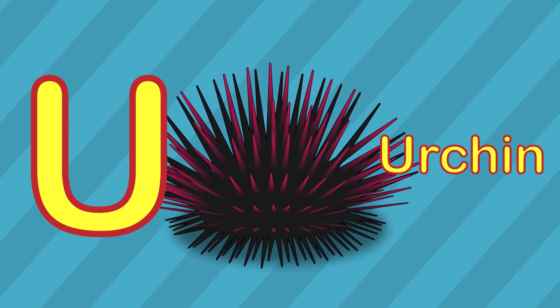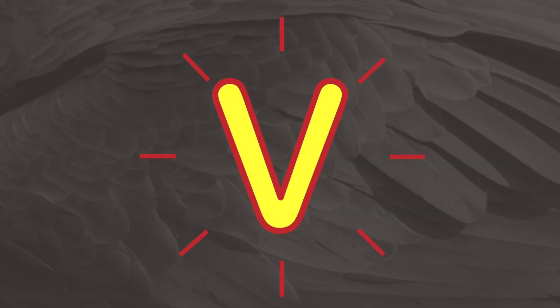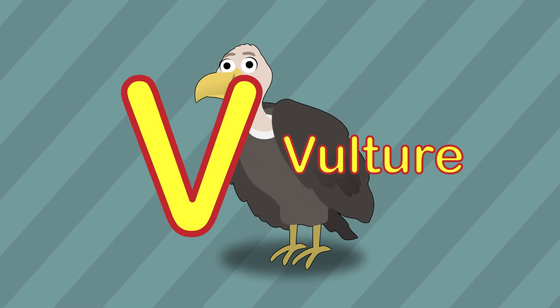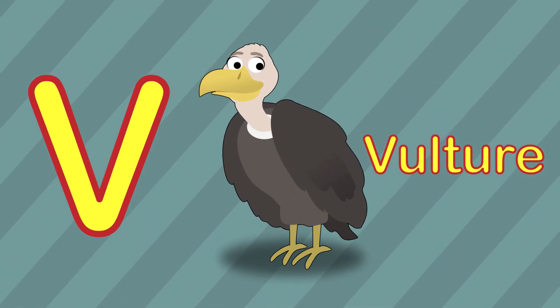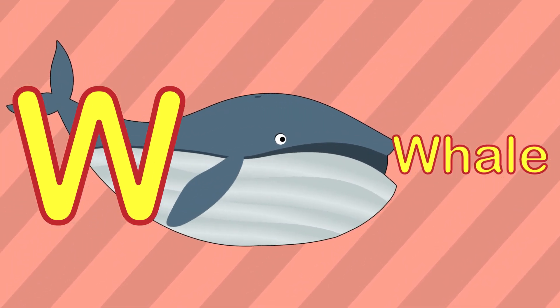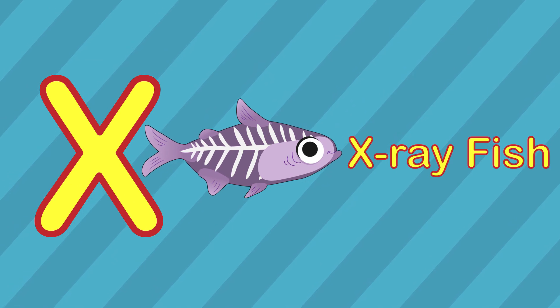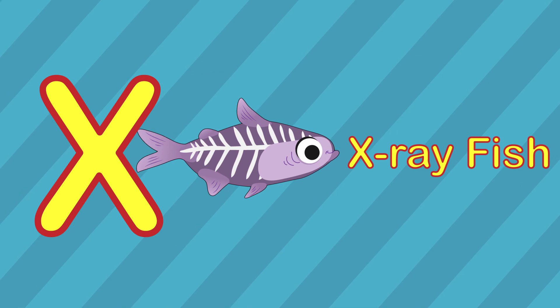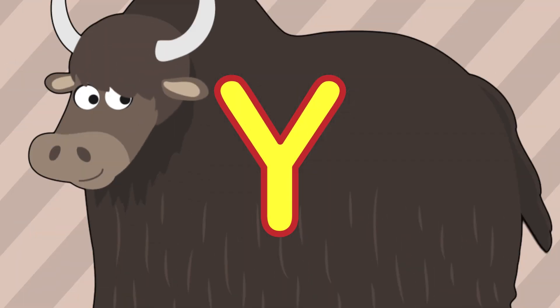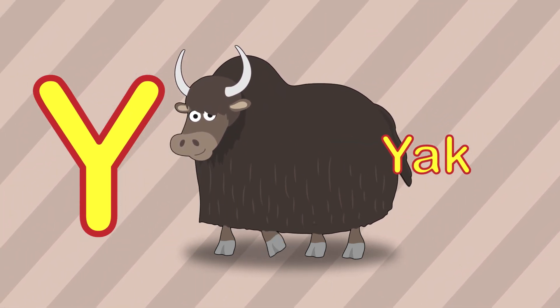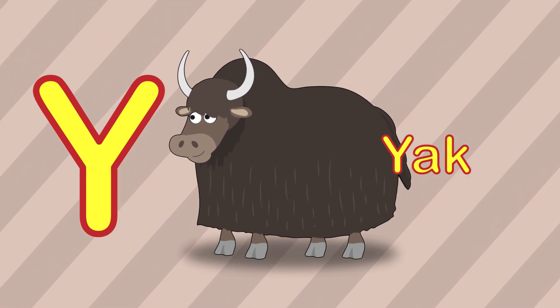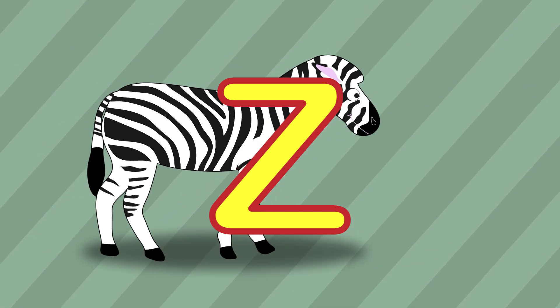U is for urchin. V is for vulture. W is for whale. X is for X-ray fish. Y is for yak. Z is for zebra.